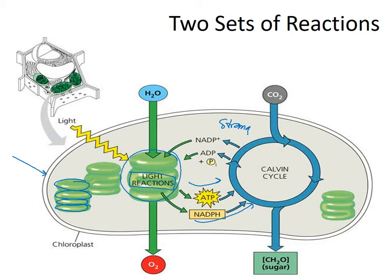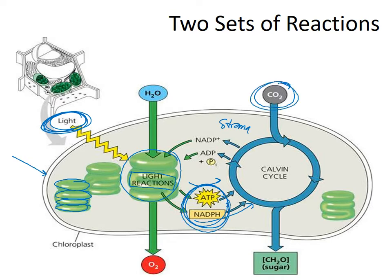Those two energy molecules go outside of these disks, still in the chloroplast, to an area called the stroma, and that's where the Calvin cycle happens. The Calvin cycle is sometimes called the light-independent reactions, and that's where carbon dioxide is used, as well as these two energy sources. So in the light-dependent reactions, we took sunlight and converted it into chemicals that contain energy, and this is where our sugar is made.